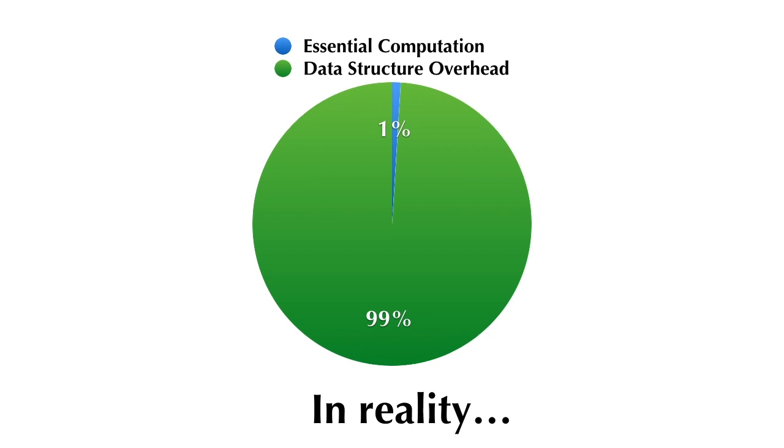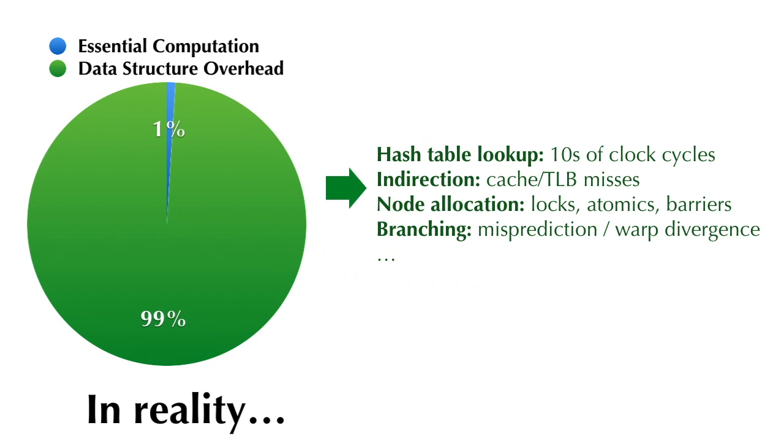This is because sparse data structures typically involve complex operations such as hash table lookup, memory indirections, node activation, and unpredictable branching. All of them are very costly on modern computer architectures.